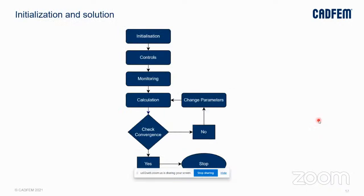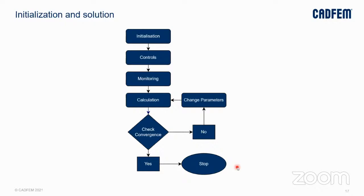Next, we go to initialization and solution. The physical phenomena in real flows are non-linear and require iterative methods to be solved. In CFD, before starting any solution, all the cells need to be initialized with the transport parameters. A good initial condition or guess can reduce solution time — if the initial condition is close to the final solution, then the iterative procedure is faster. A bad initial condition can even result in divergence.